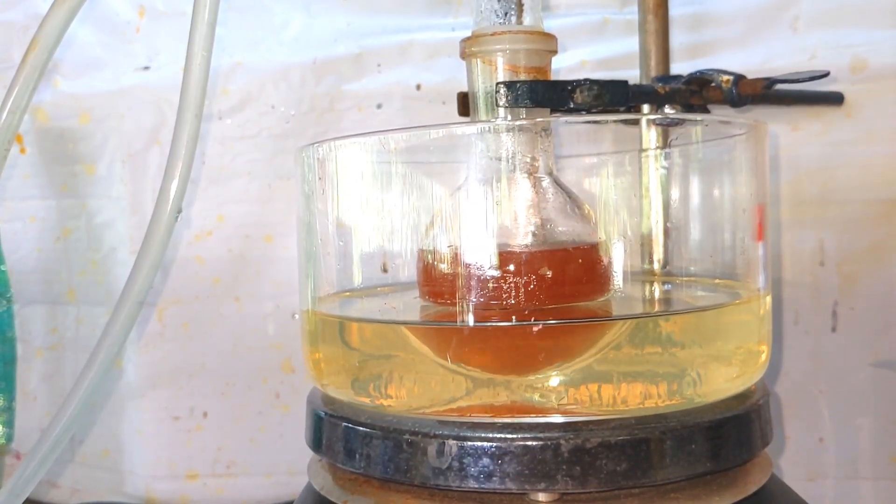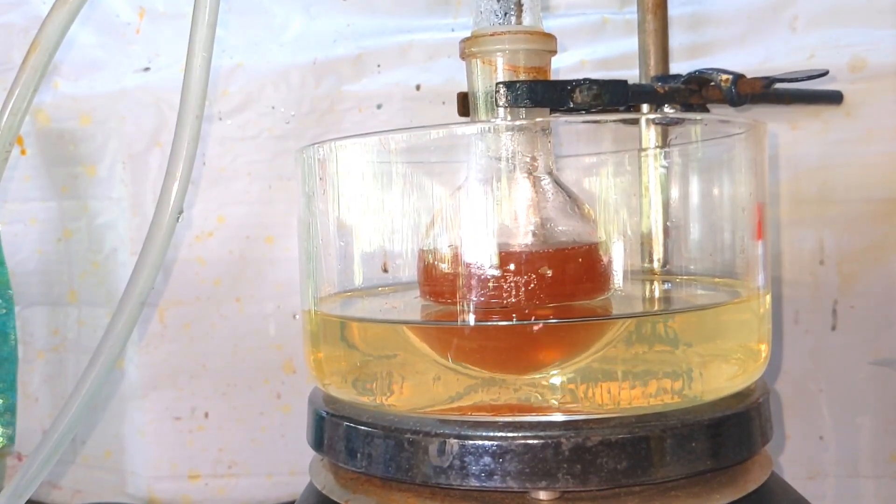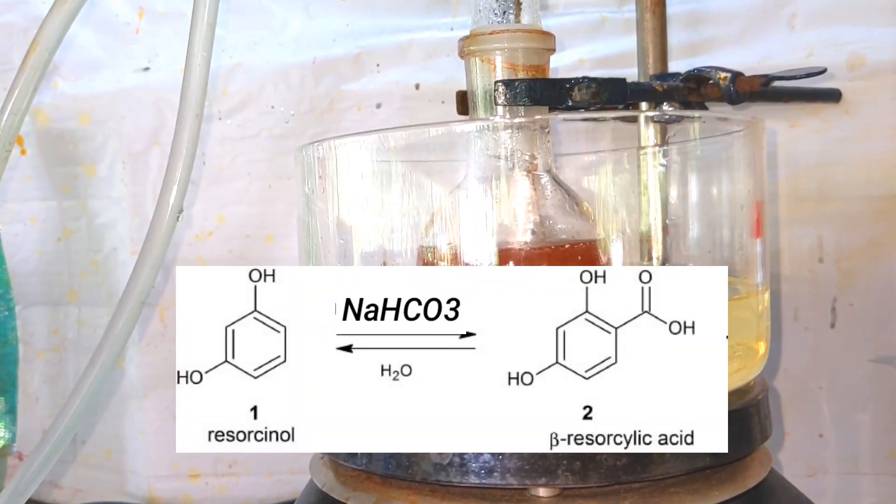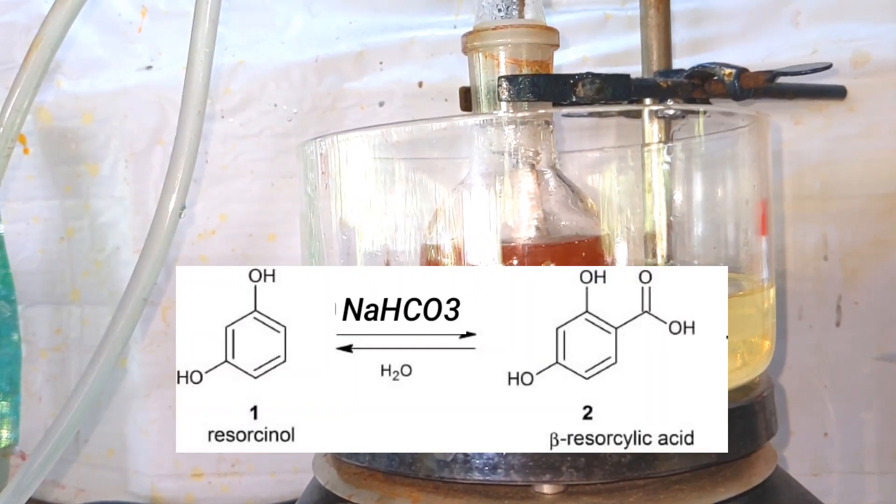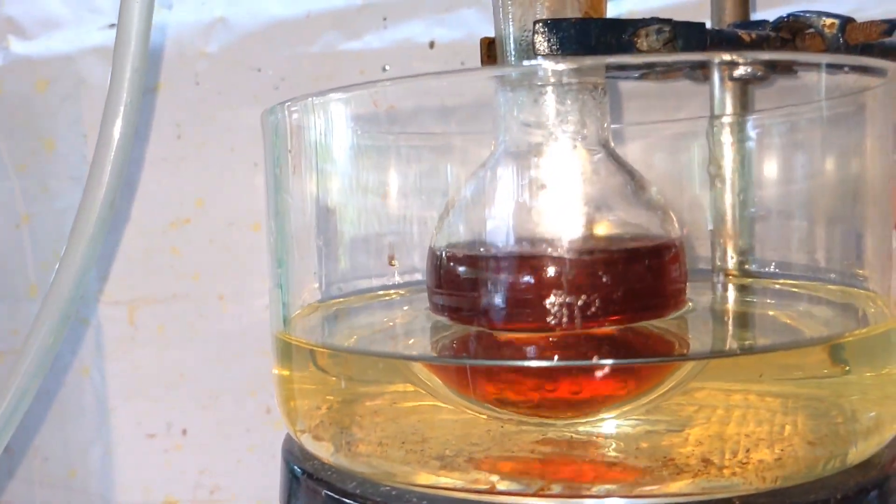But for di- and trihydric phenols, this reaction takes place conveniently. Thus resorcinol gets carboxylated to form 2,4-dihydroxybenzoic acid, also called beta resorcilic acid.